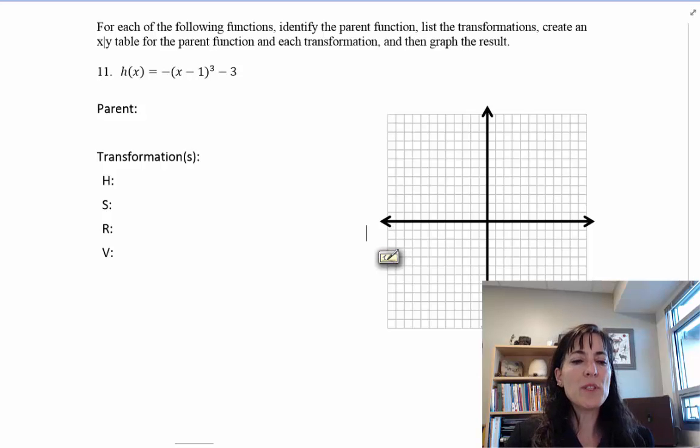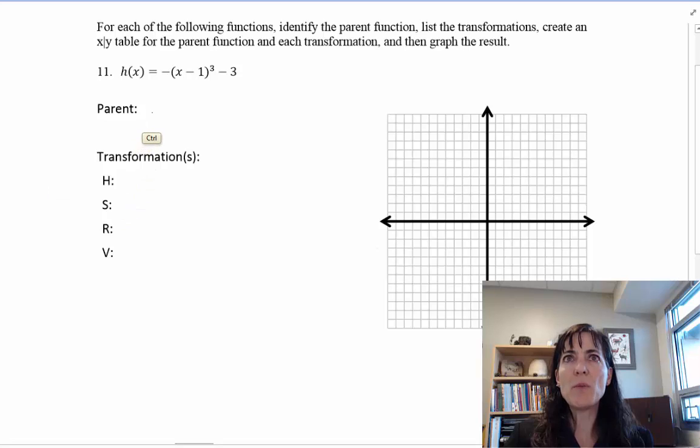We have a lot of requirements for graphing these just so that we can make sure you're getting the entire process. When I look for the parent function, I'm looking for what's happening to the X's. And I can see this X has some things subtracted from it, some things multiplied by it, and outside some things subtracted from it. But the real thing that I'm noticing is the cubed.